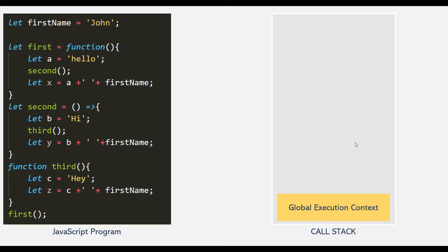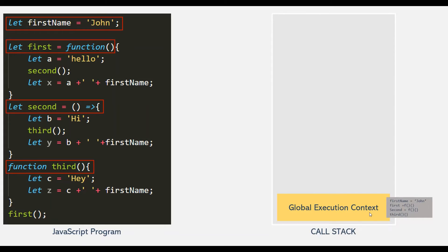So in this JavaScript program, this firstName variable, the first function, second function, and third function are not present inside any other function. So these are the top-level codes. And the top-level code gets stored and executed inside the global execution context. You can see that this GlobalExecutionContext contains the declaration of the firstName variable, the first function, the second function, and the third function.